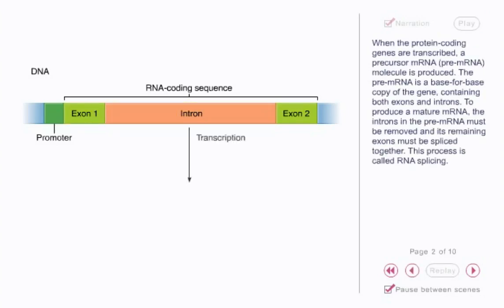When the protein-coding genes are transcribed, a precursor mRNA molecule is produced. The pre-mRNA is a base-for-base copy of the gene, containing both exons and introns. To produce a mature mRNA, the introns in the pre-mRNA must be removed and its remaining exons must be spliced together. This process is called RNA splicing.